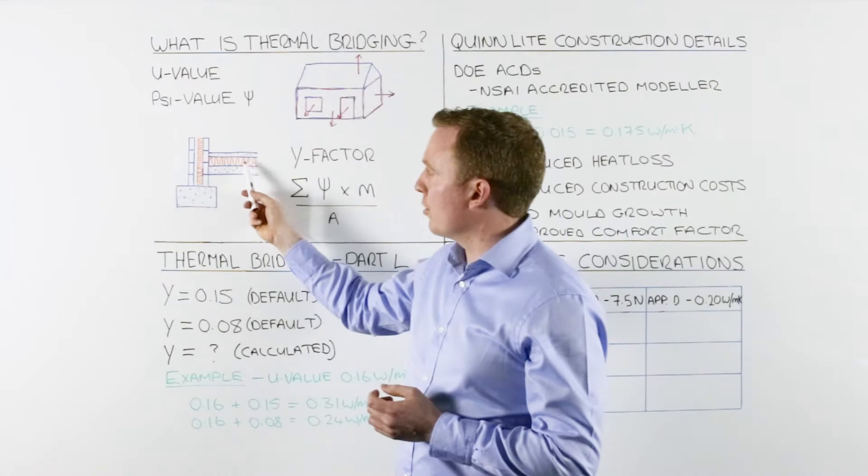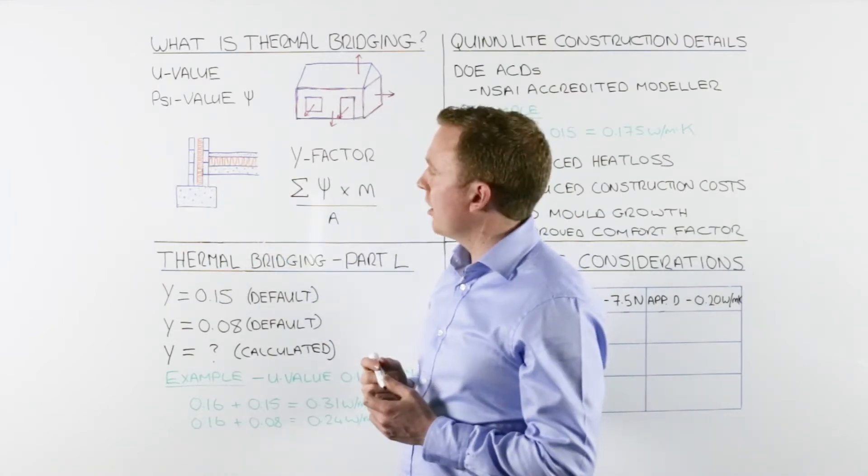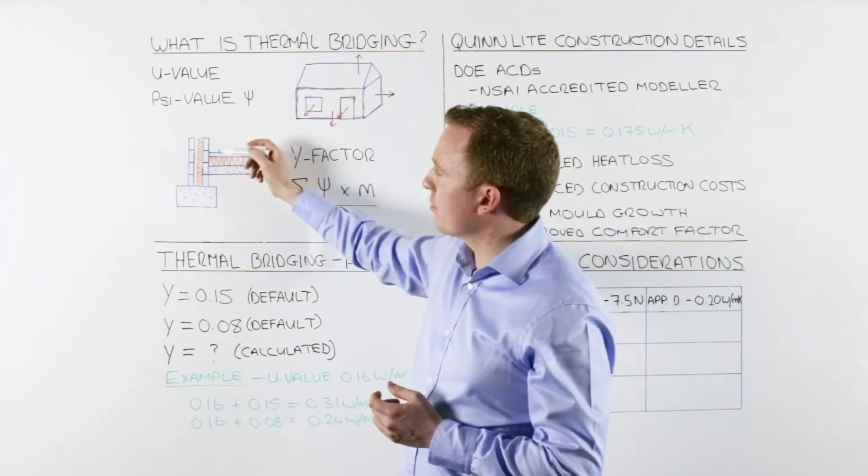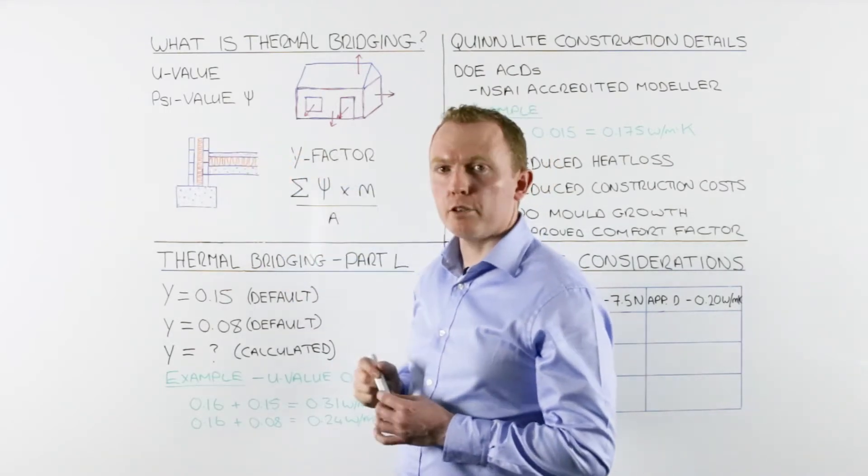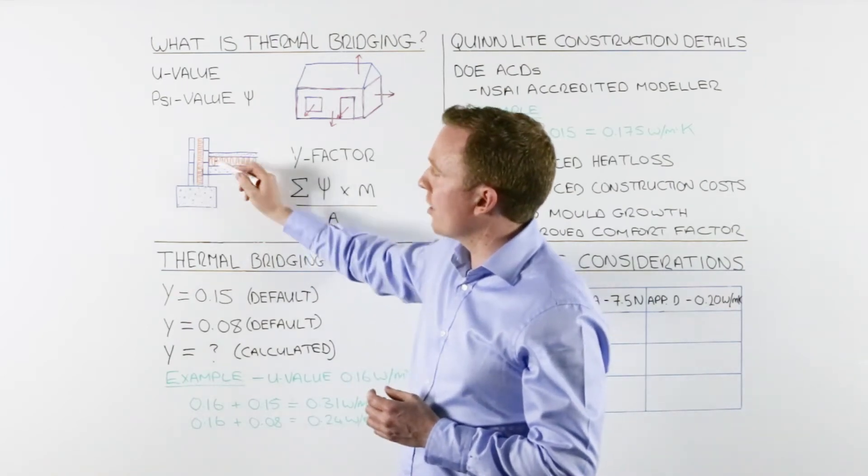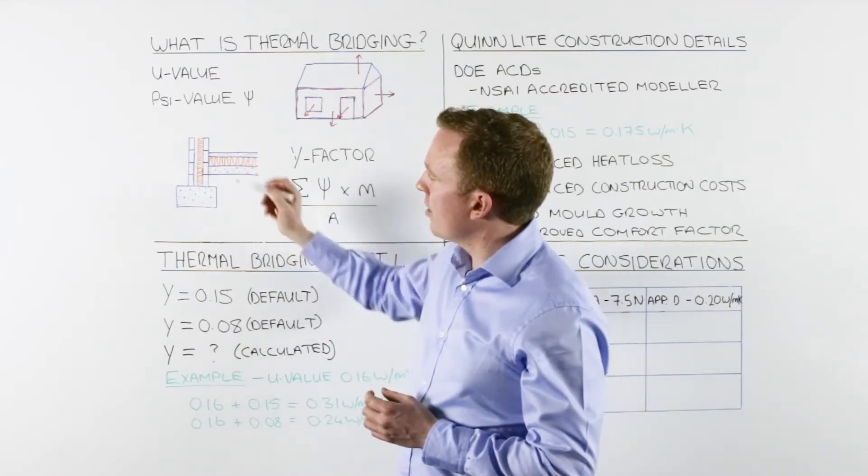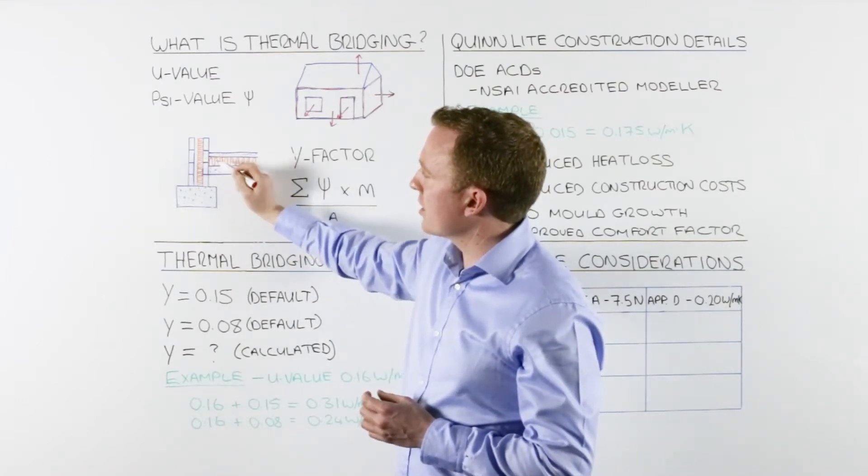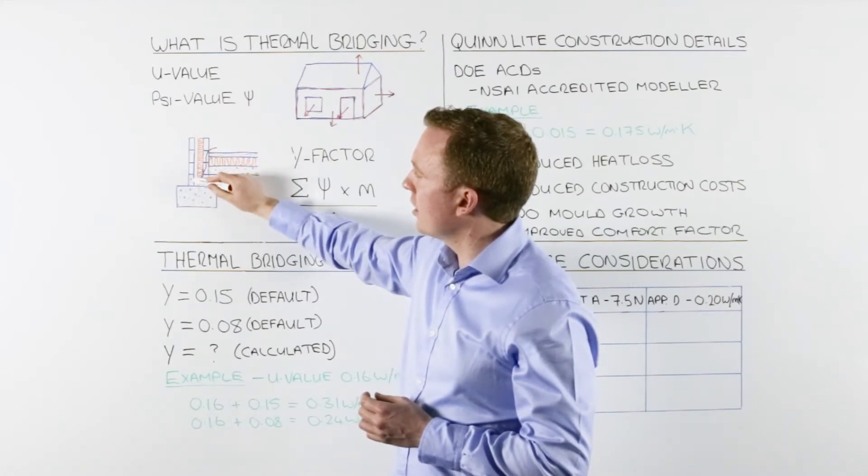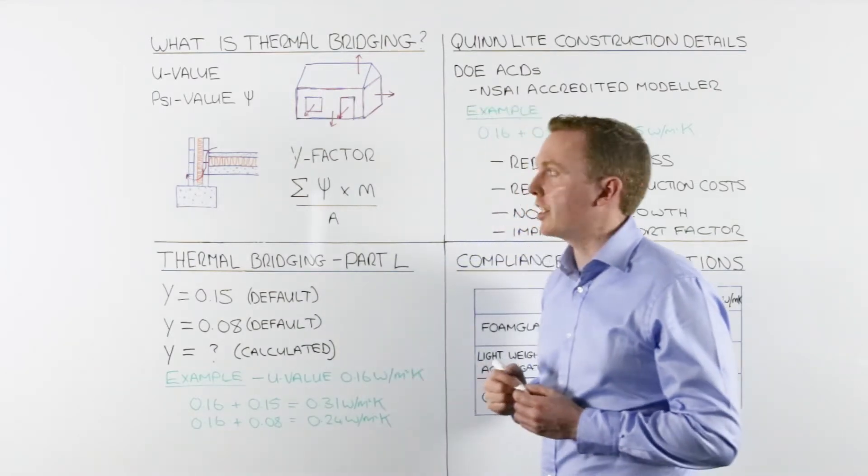If we move over then to look at this common construction detail, here we have our floor insulation and our wall insulation. U-values measure the heat loss per square meter down through our floor and out through our wall. What it doesn't measure is the heat loss at the junction between those two insulations. Because the two insulations don't meet, we have significant heat loss out through that junction, and again that's what's known as thermal bridging.